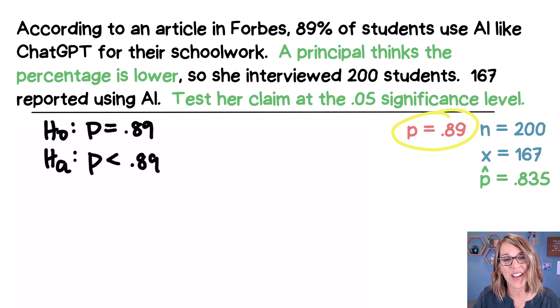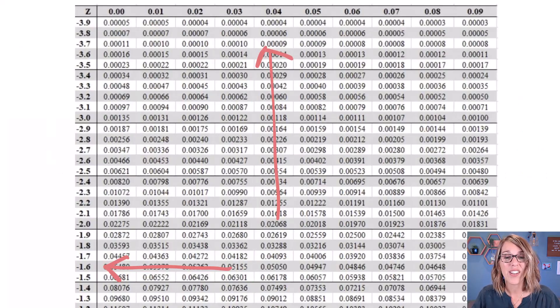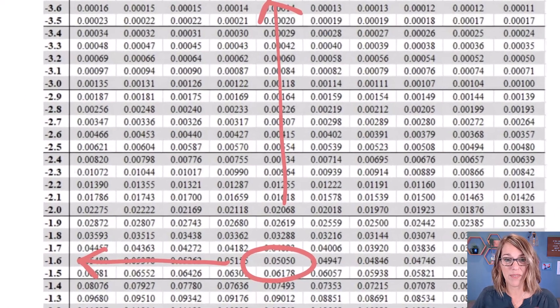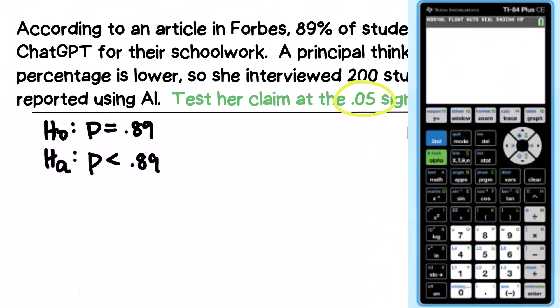In step two, we want to find our critical value. And we're going to find that critical value using the 0.05 significance level. Now you could definitely use a table, but I prefer to use my calculator instead. I'm going to use my TI-84 calculator. And in my calculator, I'm going to go to my distribution menu. So second distribution. And then I want inverse norm.